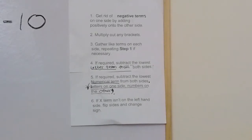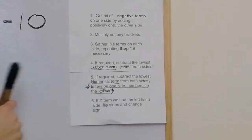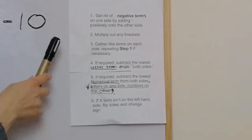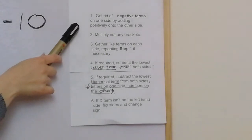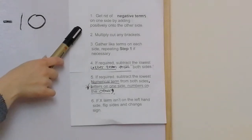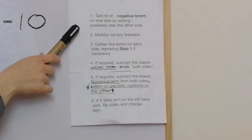So what I've created here is a six-step guide. That might seem excessive; however, there's every chance that you're not going to need to use every single step, and this six-step guide covers every possibility. The first thing is to get rid of any negative terms on one side by adding them positively onto the other side.